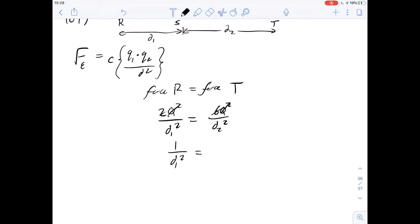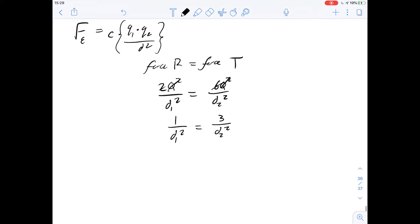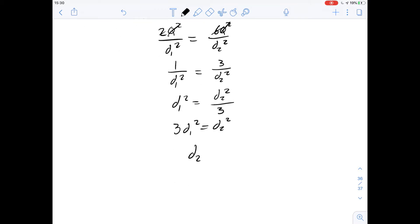So we can cancel off these q's and divide by 2 on both sides and get 1 over d1 squared equals 3 over d2 squared. So if we flip both these fractions over we get d1 squared equals d2 squared over 3. So 3d1 squared equals d2 squared.